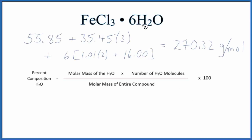In this video, we'll calculate the percent of water by mass in this FeCl3·6H2O. This is iron 3 chloride hexahydrate.